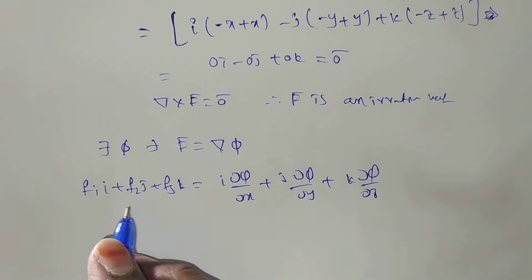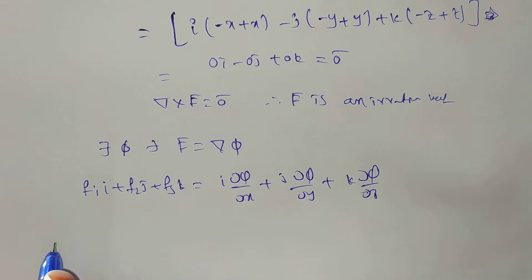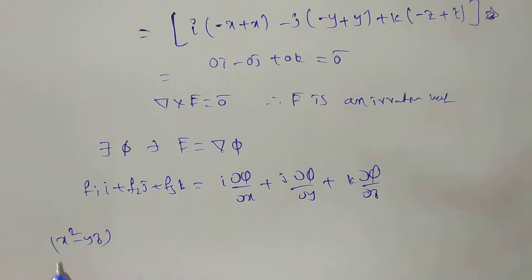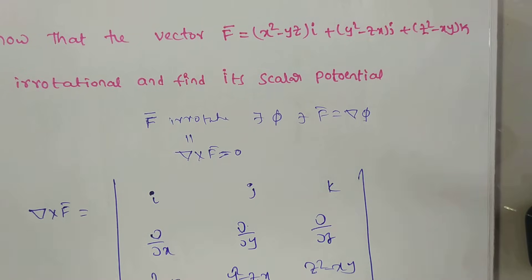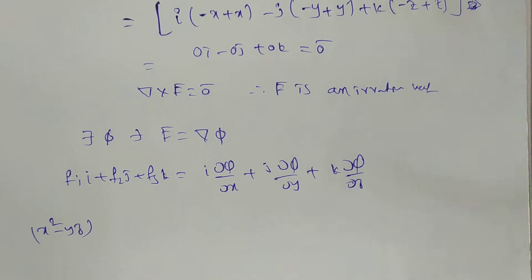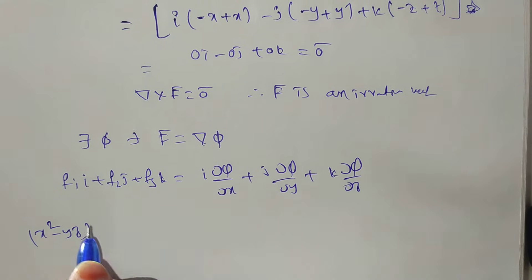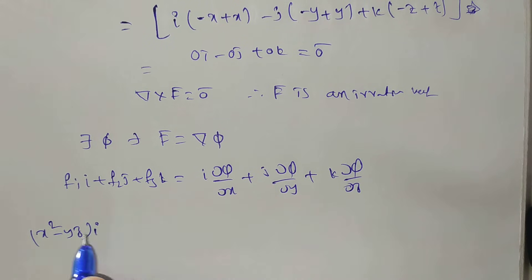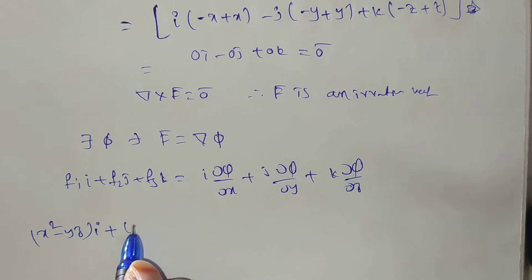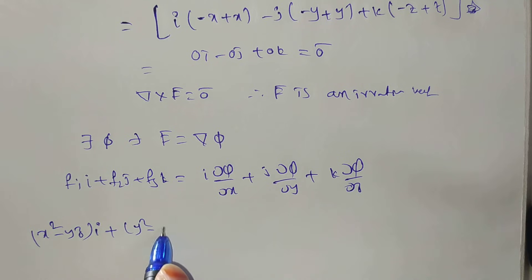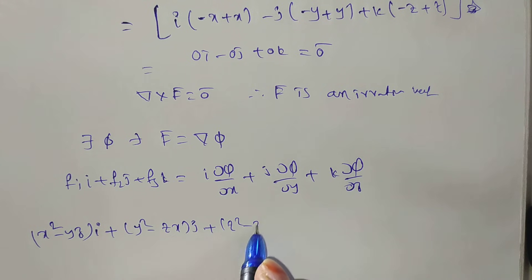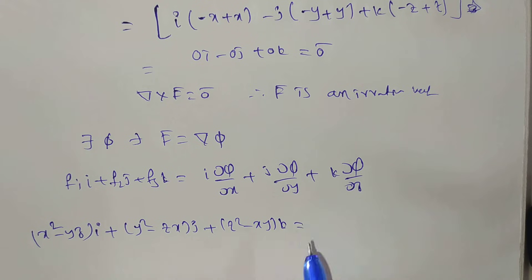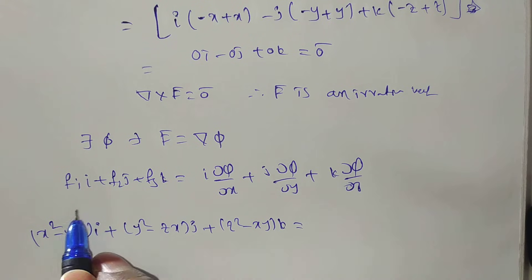Now, f̄ = (x² − yz)i + (y² − zx)j + (z² − xy)k. We compare this with ∇π.